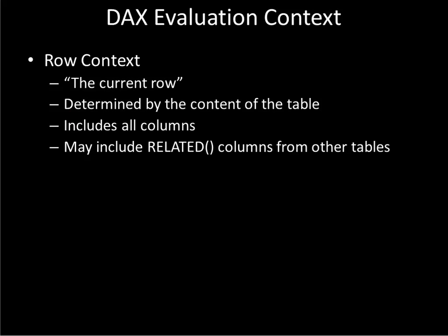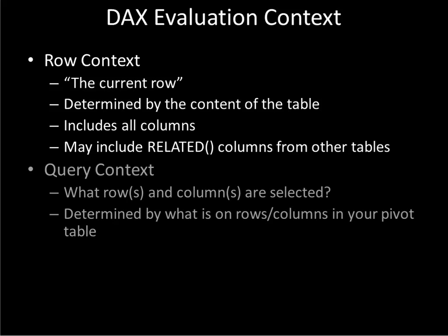Our context is really built up from a couple of layers. The first is the row context — just think about the current row. This is mainly determined by which columns are in the table. Perhaps some of those columns are calculated, or pulled in with the related function, which is kind of like a VLOOKUP where we're pulling in a number from a related table. All of that becomes part of the row context, and this is probably the easiest of them to understand.